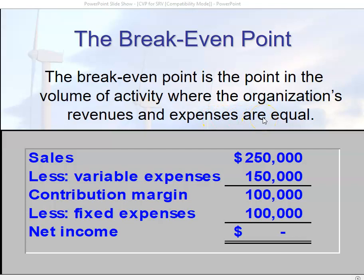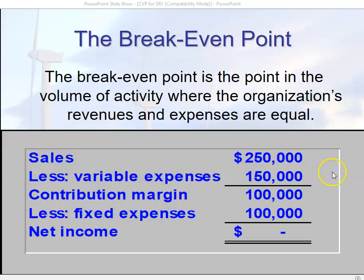Let's look at this example and learn a new term along the way. Sales are $250,000 in this particular example, and we're going to subtract out variable expenses. Probably the biggest variable expense is cost of goods sold, but we subtract out all variable expenses — whether product-related or not — and we have $150,000. When we subtract the $150,000 in variable expenses from sales of $250,000, we're left with $100,000, and we call this contribution margin.